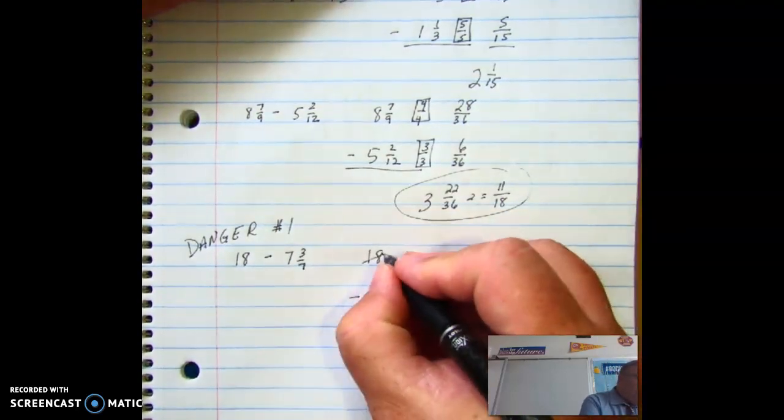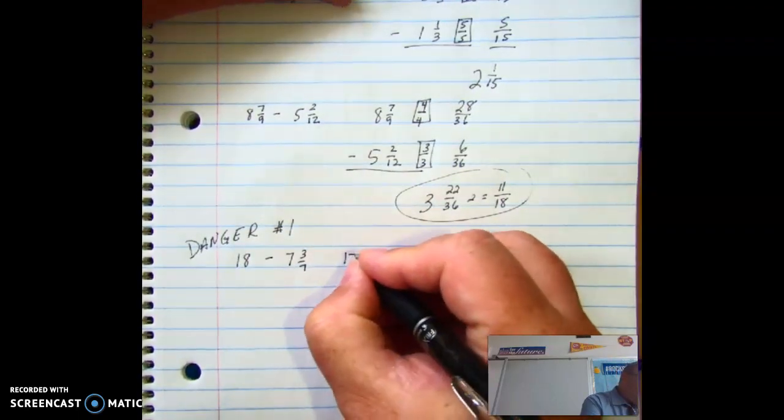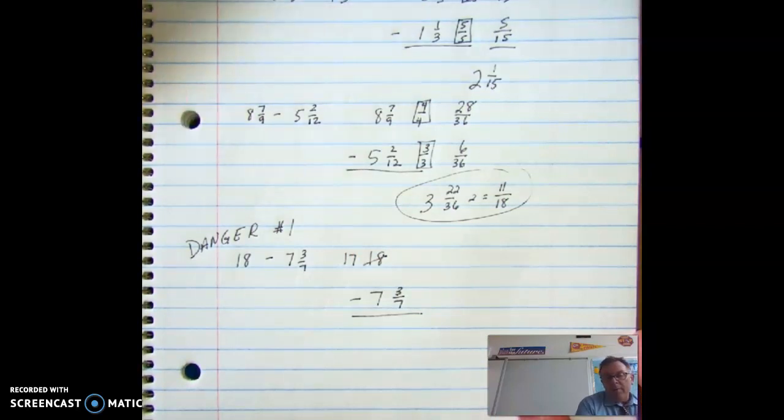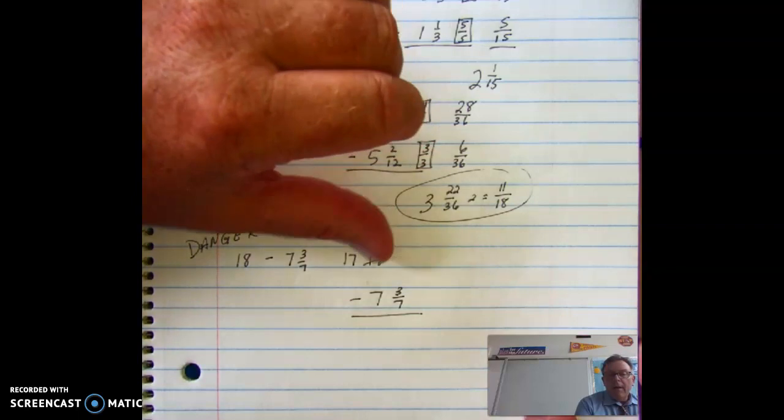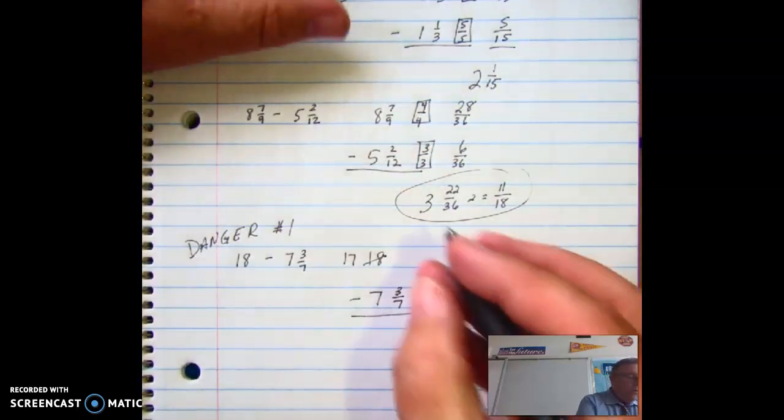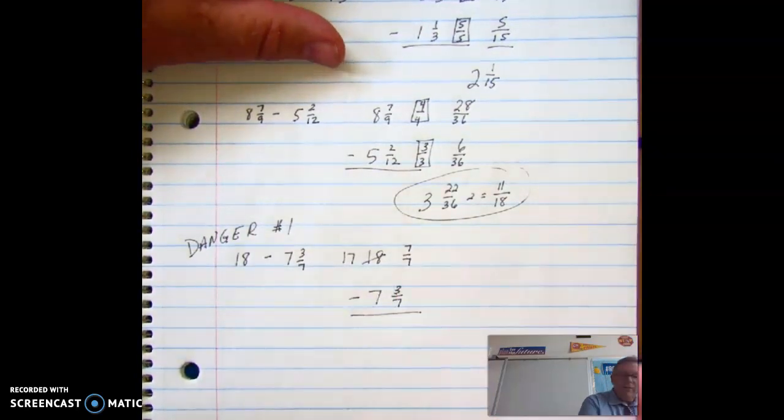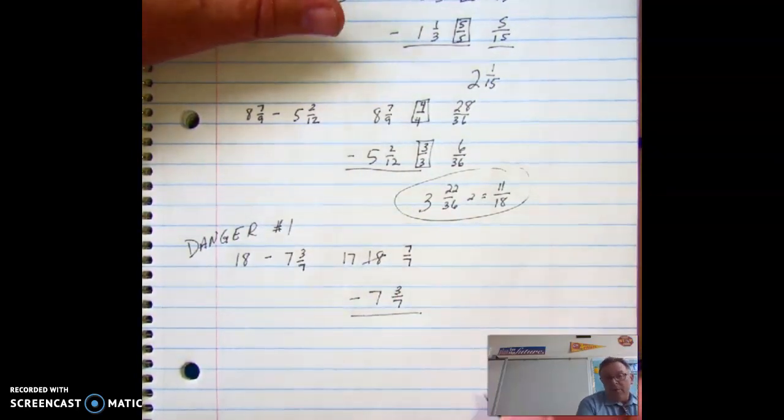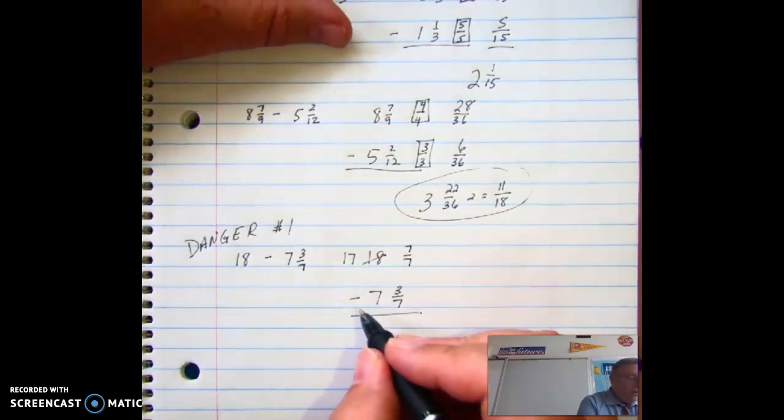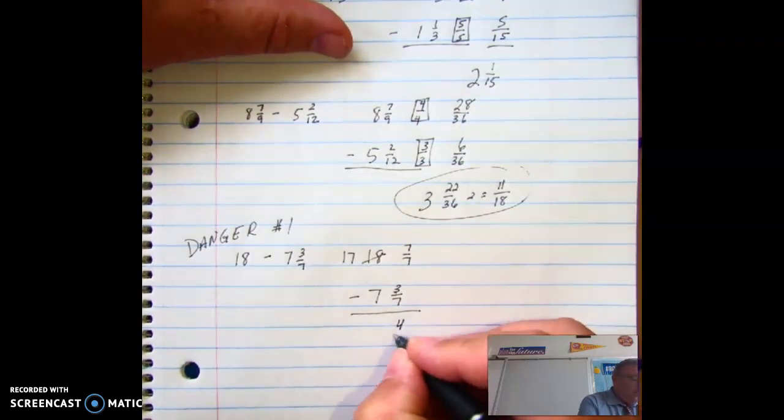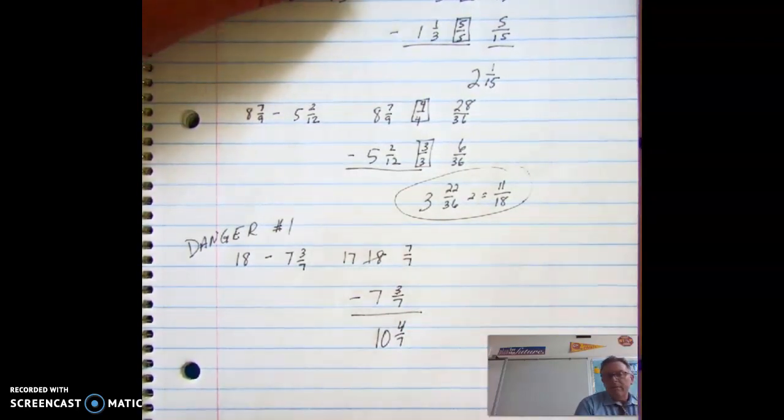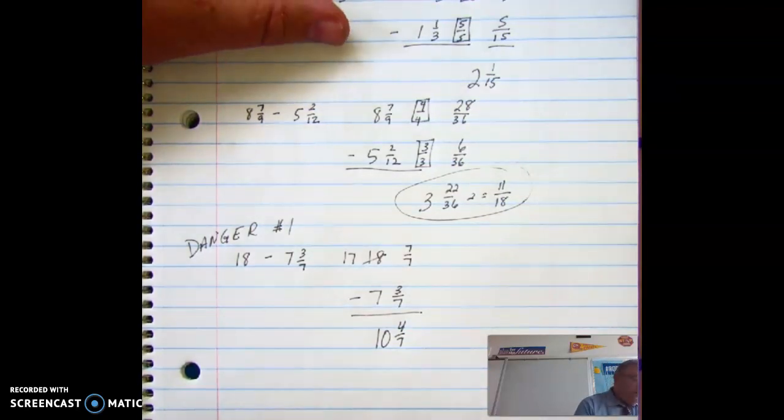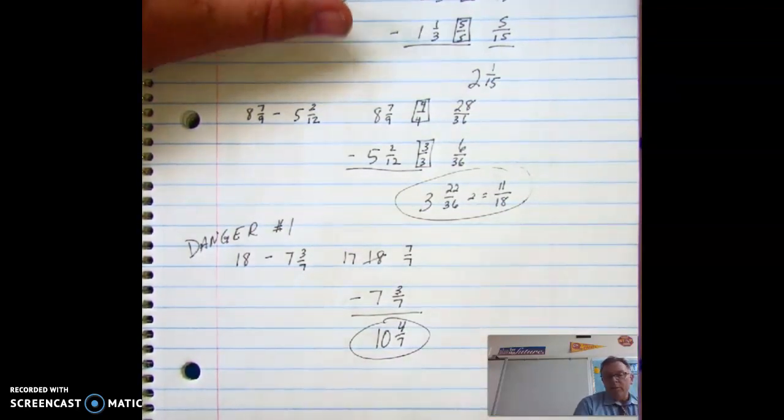So what I'm going to do is I'm going to create a fraction. I'm going to borrow from the 18. I'm going to borrow one whole, so that makes it 17. And then for the fraction, remember our rule for subtracting fractions is we must have a common denominator. So if I borrowed one whole and this is sevenths, one whole in this one is going to be 7 sevenths. Now I have a fraction that I can subtract from. So I do 7 sevenths minus 3 sevenths, we end up with 4 sevenths. 17 minus 7 is 10. Take one final look. It will not reduce, 10 and 4 sevenths as my difference.